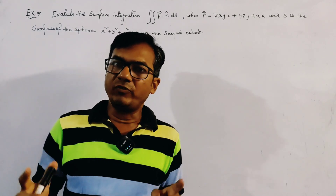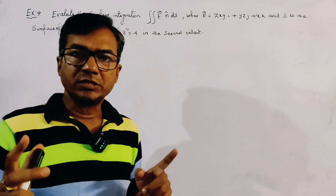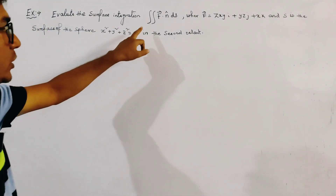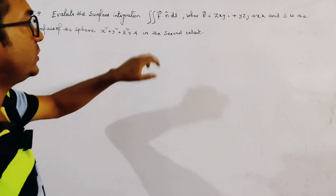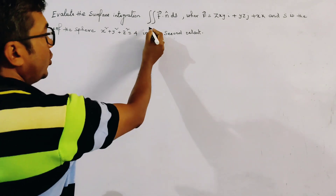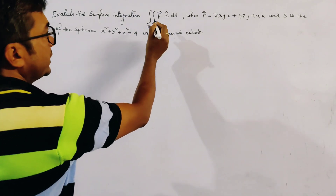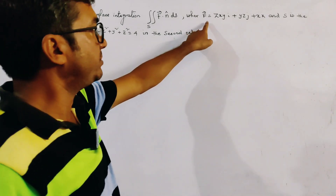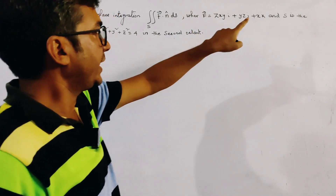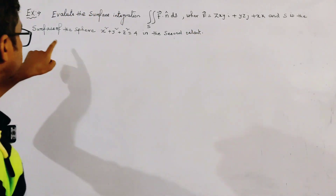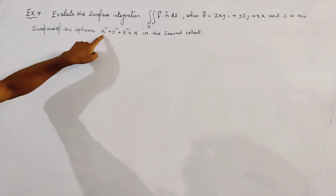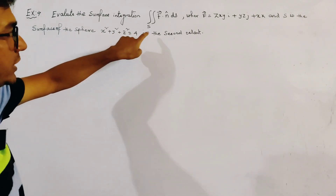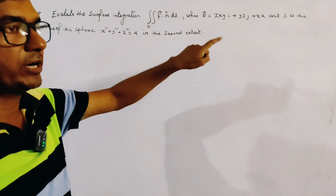We have to find the surface integration given by double integration over S of F dot N dS. F is given, and S is the surface of the sphere x² + y² + z² = 4 in the second octant.